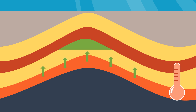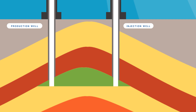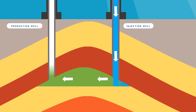As petroleum engineers, we have to design ways to extract the oil to the surface, and one procedure that has been successfully used in the industry for several years is water injection. In this simplified animation, we have one injection and one production well on each end of the reservoir. But in the field, it is more likely that several wells are drilled across the reservoir. Water is injected through the injection well, which then pushes the oil in place towards the production well, encouraging hydrocarbon production.